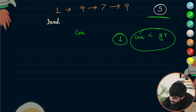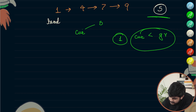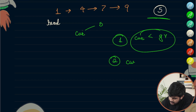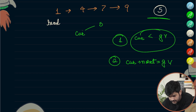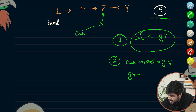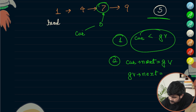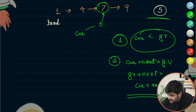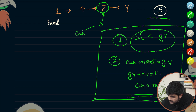Now, we want current to first point to 5 — the given data. So in the next step, given_value.next should point to current.next, which is 7. And current.next should point to the given value. This is the algorithm when we need to insert the value in the middle.